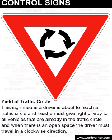Yield at a traffic circle. This sign means a driver is about to reach a traffic circle and he or she must give right of way to all vehicles that are already in the traffic circle, and when there is an open space the driver must travel in a clockwise direction.